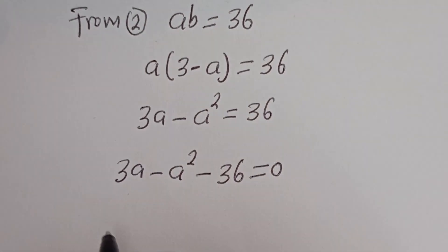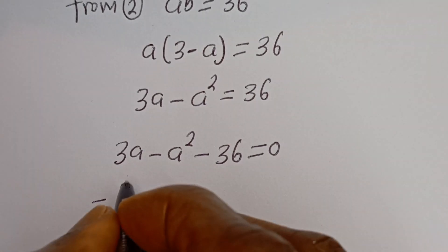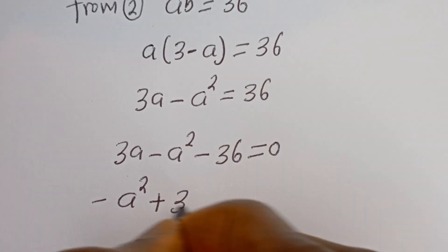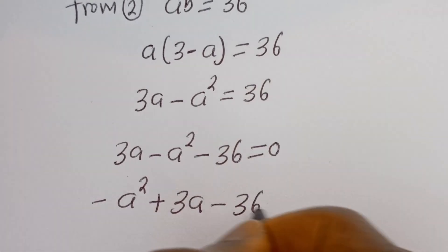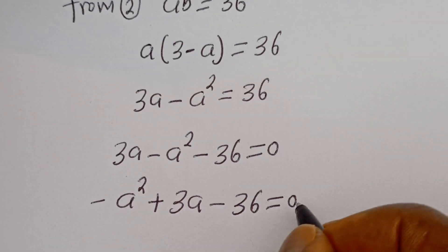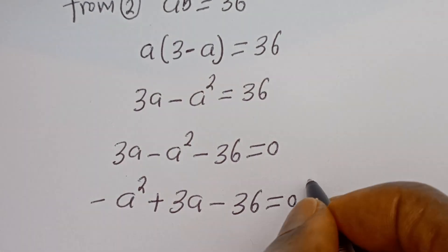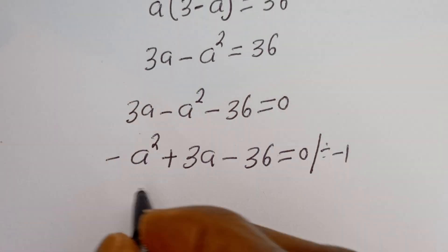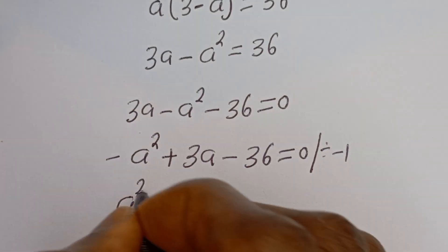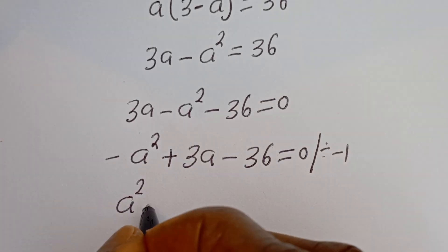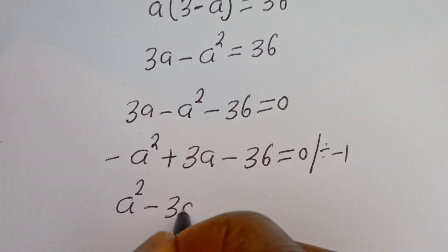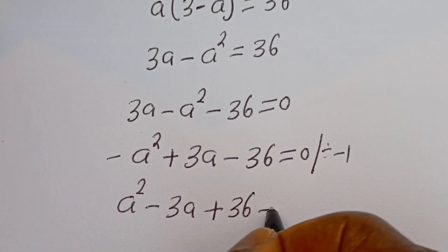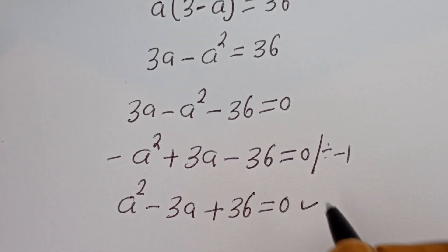Let's put this in standard form: minus A squared plus 3A minus 36 is equal to 0. Let's divide all through by minus 1. Then we have A squared minus 3A plus 36 is equal to 0. This is a quadratic equation.